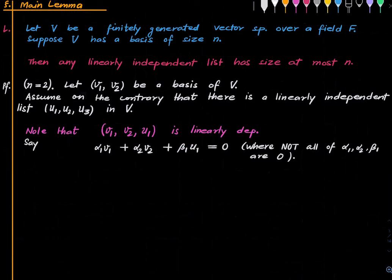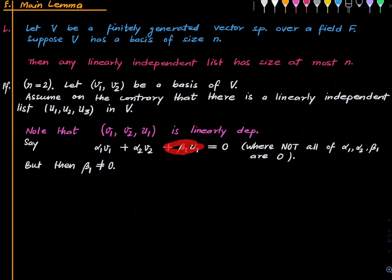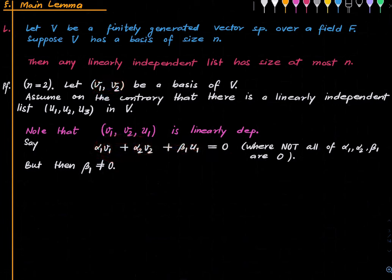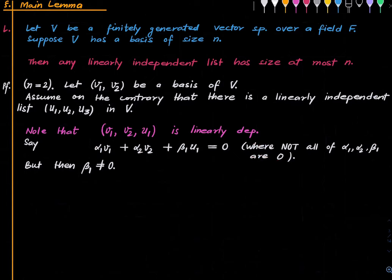Note that β₁ cannot be 0. Why? Because if β₁ were 0, we would have α₁v1 + α₂v2 = 0, which means a linear combination of v1 and v2 is 0. But since v1 and v2 form a basis and are linearly independent, the only combination giving 0 is the trivial one. Hence α₁ and α₂ would also be 0, contradicting the choice of α₁, α₂, β₁. So β₁ is non-zero.